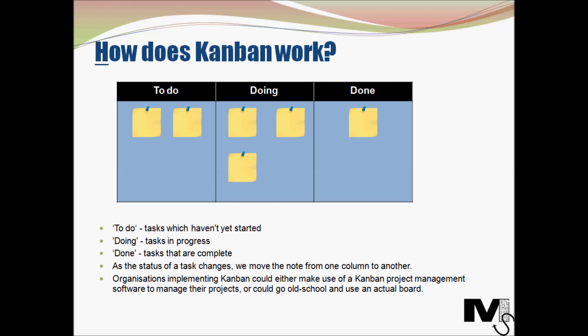This is the simplest form of Kanban there can be. 'To do' represents tasks which haven't yet started, or the backlog. 'Doing' categorizes the tasks in progress, and 'done' categorizes tasks which are complete. The sticky notes contain the actual tasks. As the status of a task changes, we move the note from one column to the other — for example, if a task under 'to do' is going to be done now, we transport it over to the 'doing' column.